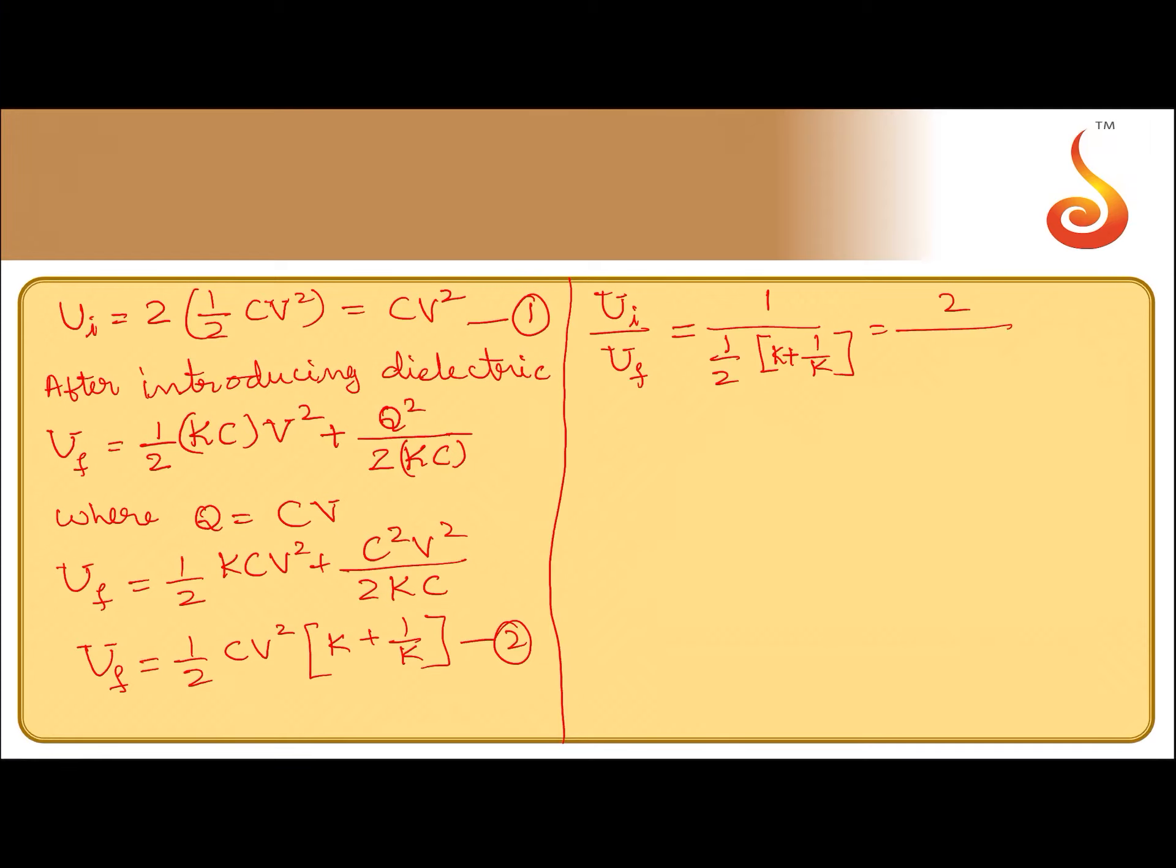2 goes to numerator, K plus 1 by K, LCM will be K, it should be K square plus 1. K goes to numerator, you will get 2K divided by K square plus 1.